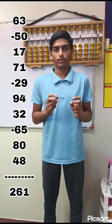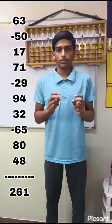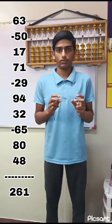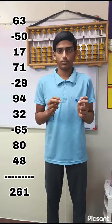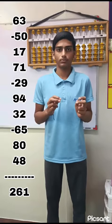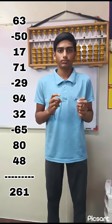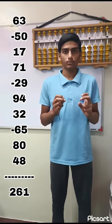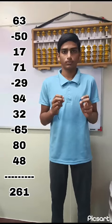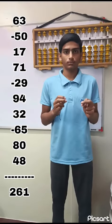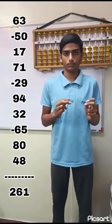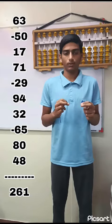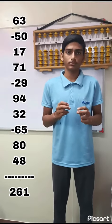63, minus 50, 50, 17, 71, minus 29, 94, 32, minus 65, 80, 48 — that is 261. Right.